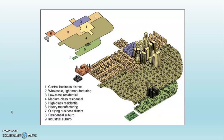Take a look at the first iteration of this model from 1945. You can see that there's still a central business district right there. And you can see wholesale and light manufacturing — there's a manufacturing area that in the concentric zone model encircled the CBD, but now it's just right next to it.